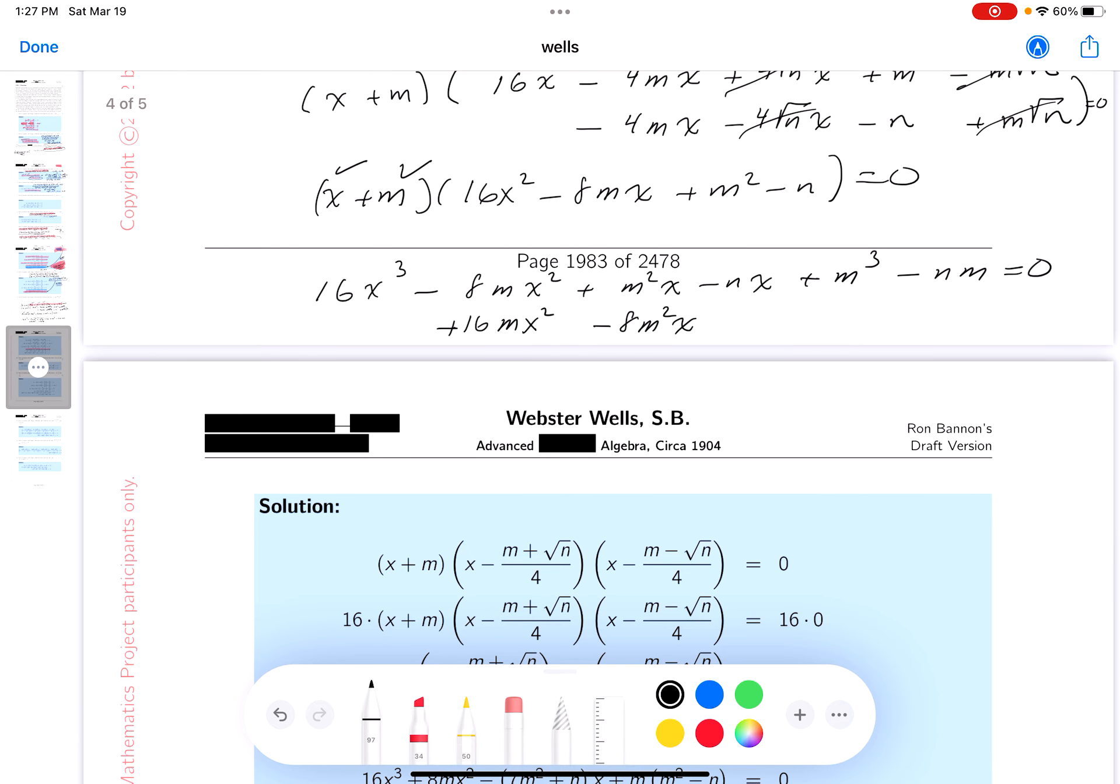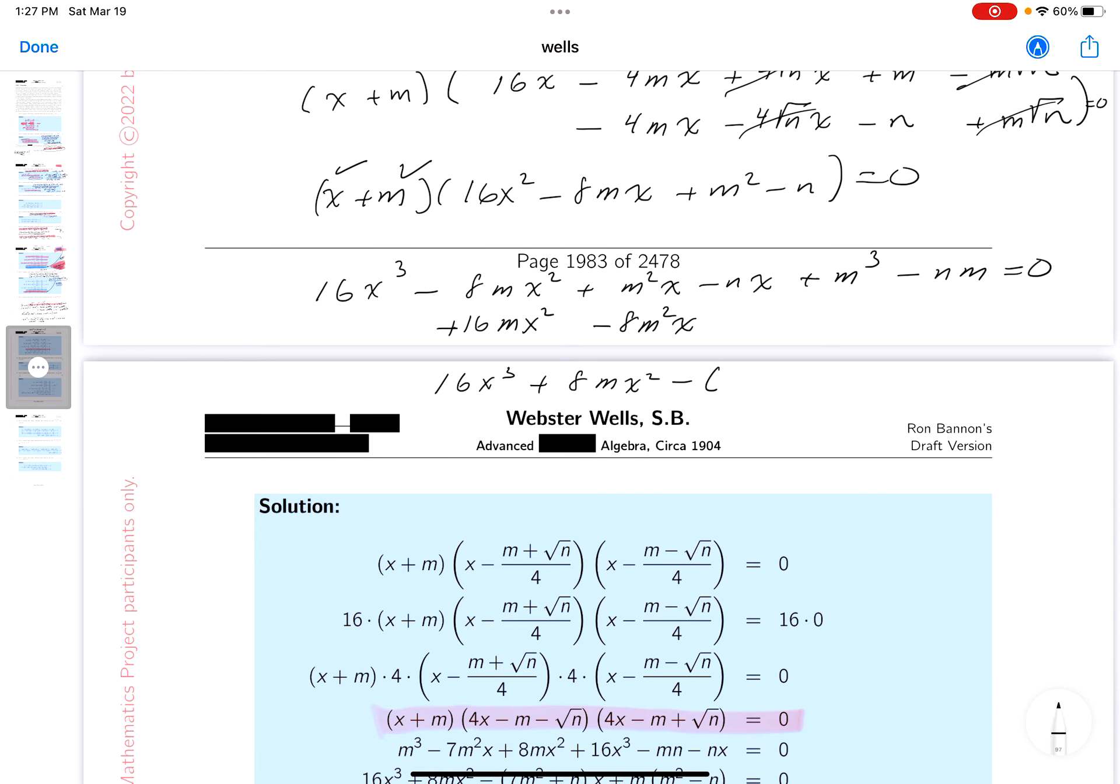Let's add together. What do you get? 16x cubed. Plus 8m x squared. Well, this is going to be something, isn't it? And what do you get there? You're going to get, let's see. Minus 7m squared plus n x.